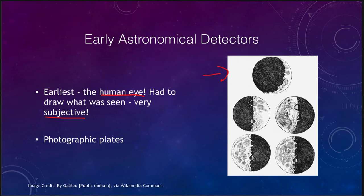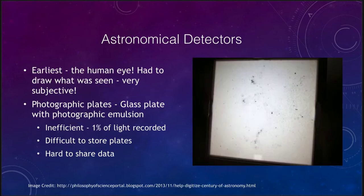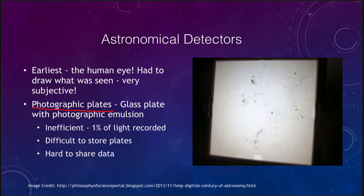These early eye-based observations were then replaced by the photographic plate. As compared to the eye, photographic plates were much less subjective because they provided a permanent record. A photographic plate is essentially a glass plate with a photographic emulsion on it. These were significantly better than the human eye — a very objective measure, with nothing left to the interpretation of the person doing the drawing, so people studying the same object would get essentially the same image.